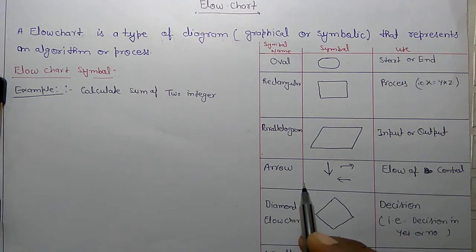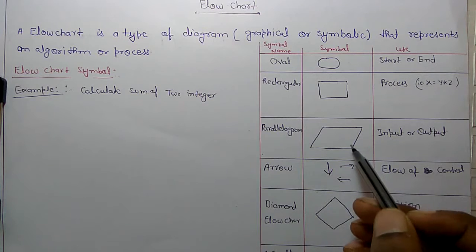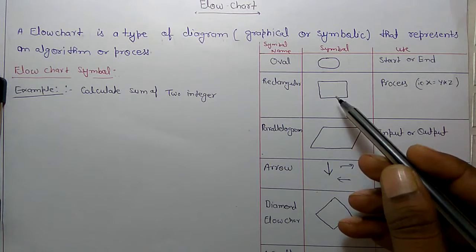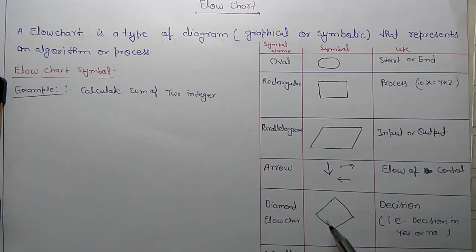Arrow is used for flow of control from one place to another place. For example, if there is input and you want to go to next process. This is diamond flowchart and this flowchart represents decision.